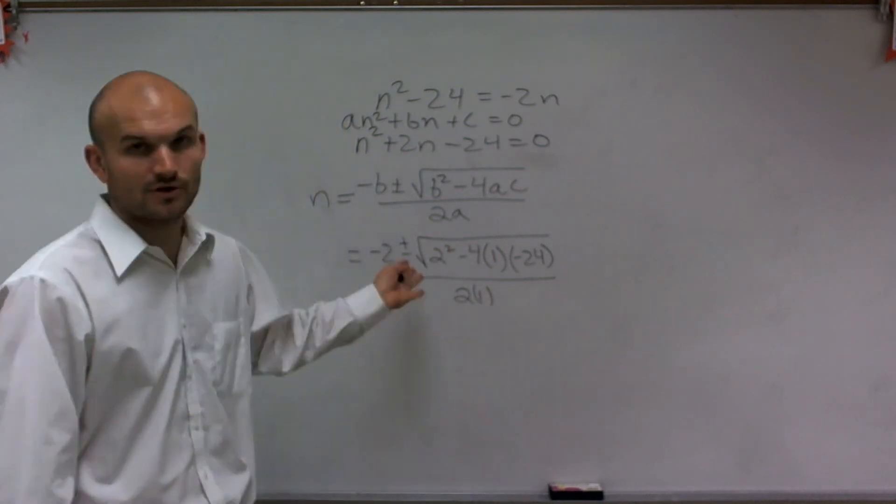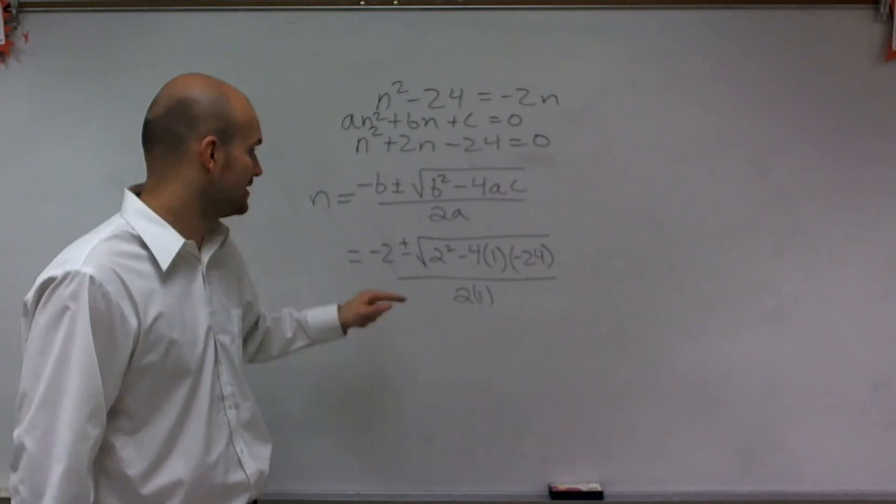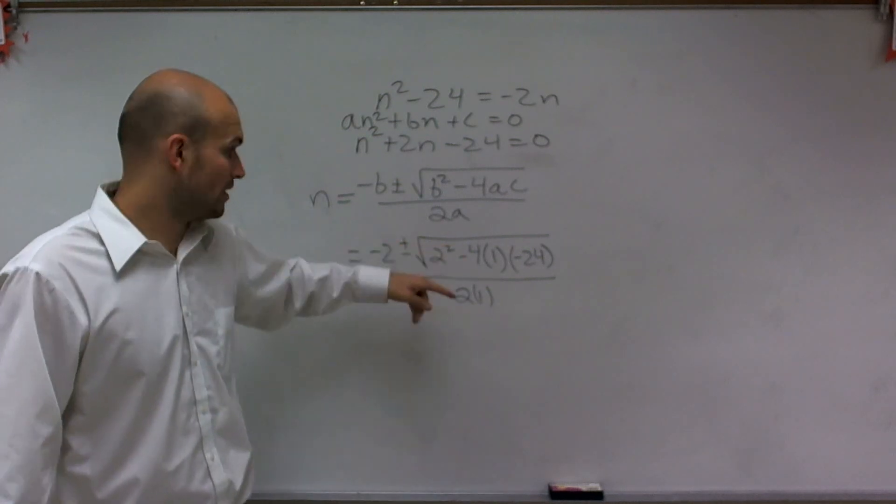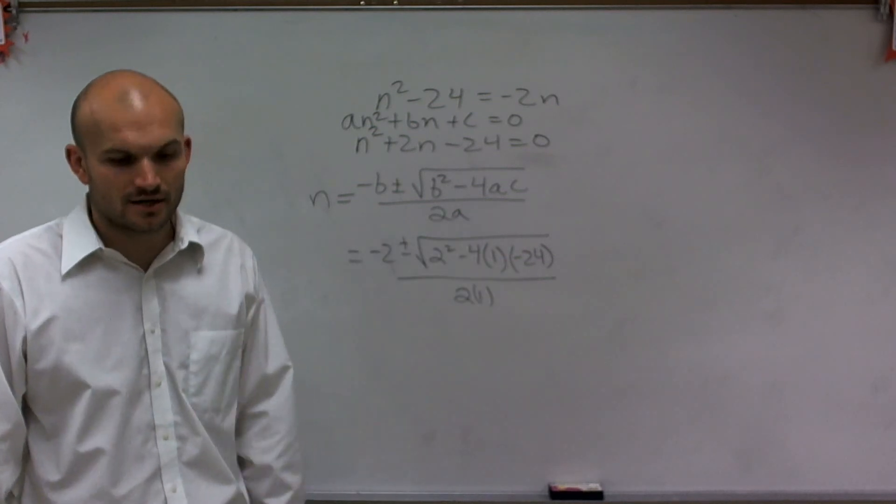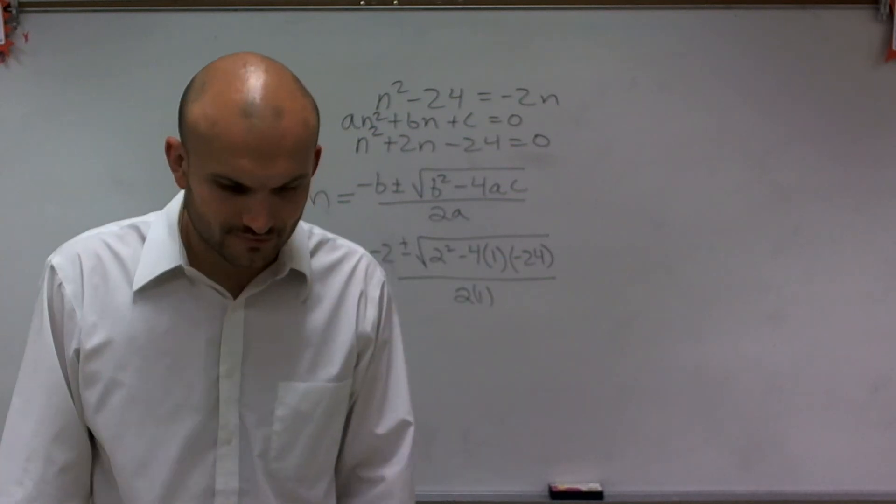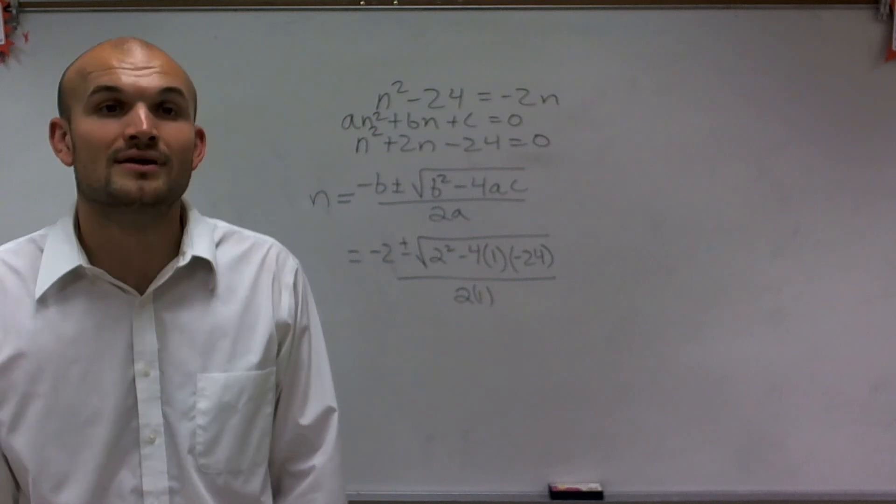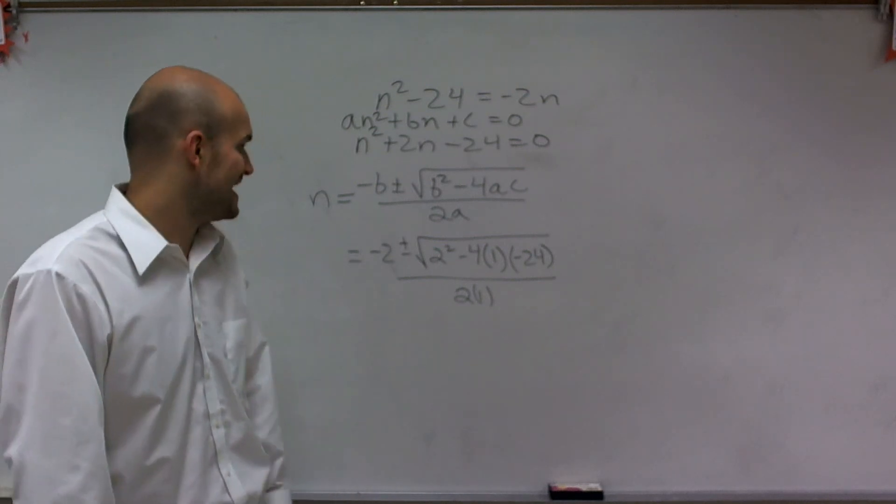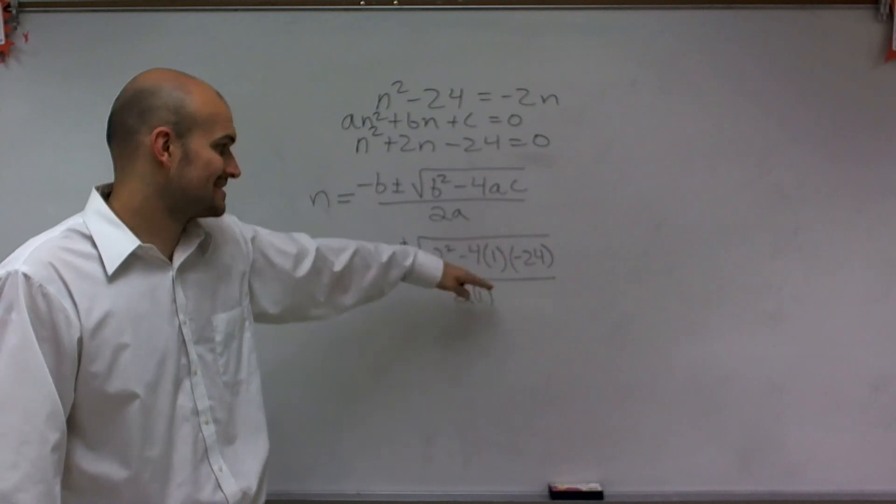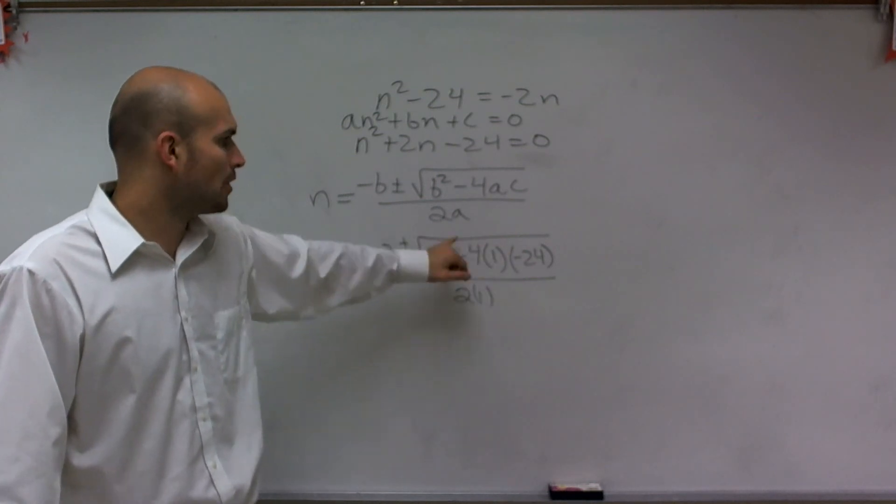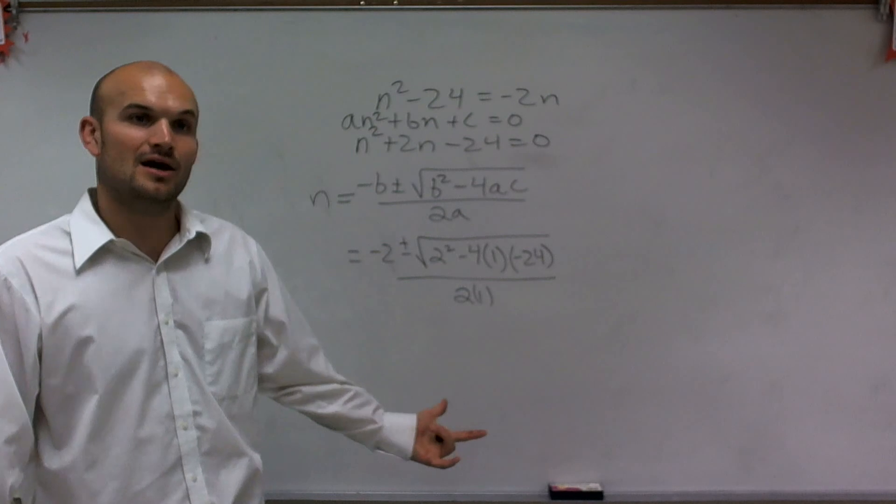Now let's simplify this a little bit under the radical. I have 2², which is 4. Then I have -4 × -24, which is going to be positive 96. So I really have 4 + 96, which is 100.